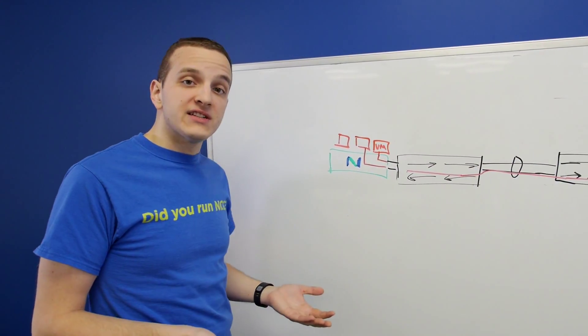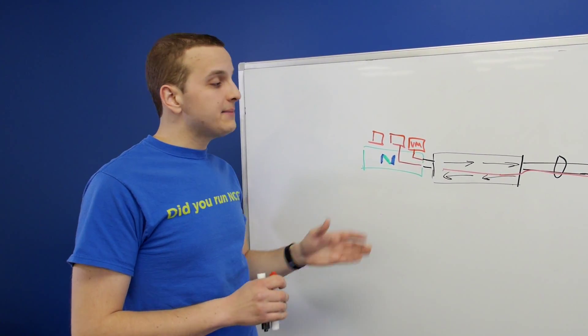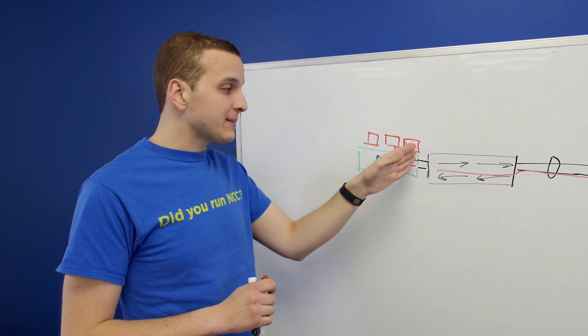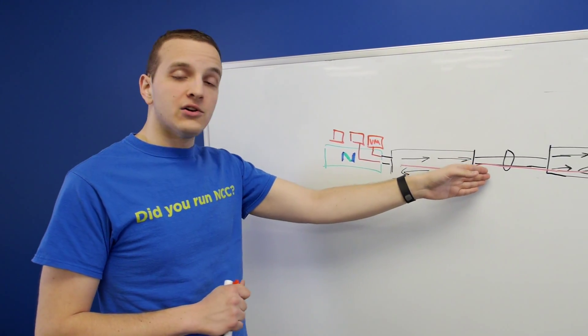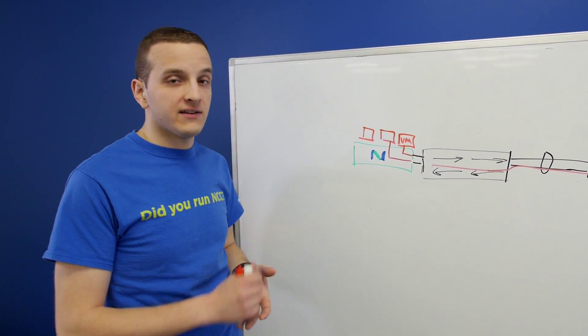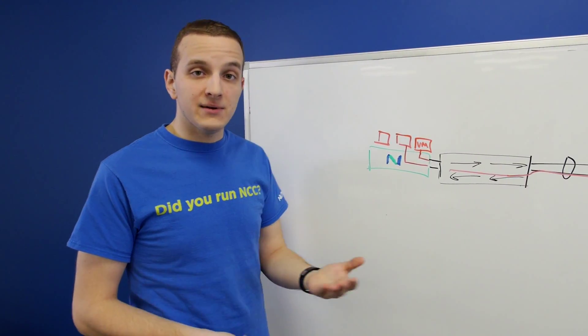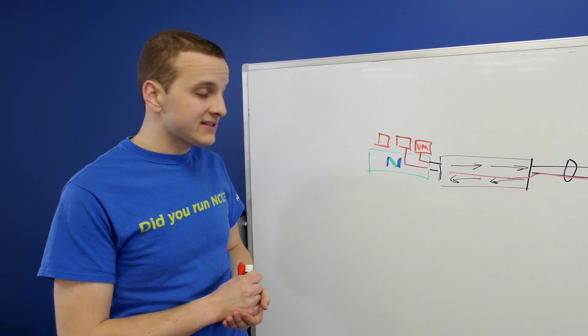So that's port channels in a nutshell. The most important thing to remember with them is that it's not a perfect distribution. Sometimes you might have a hot link or one link might be underutilized, and it's important to evaluate what your traffic load looks like across these, so you can choose the best one for your environment. I hope that was useful. Thank you guys for tuning into these Tech Topics, and I'll see you next time.